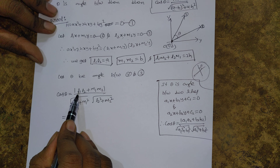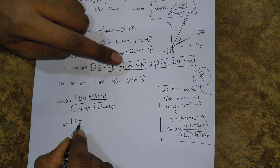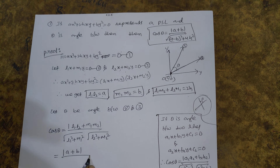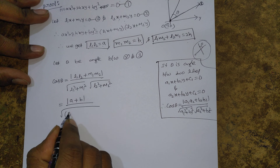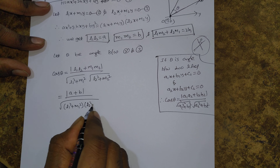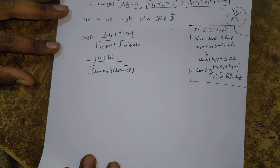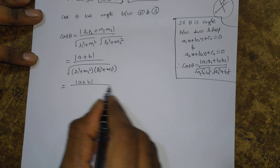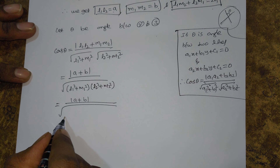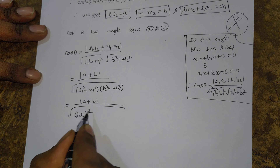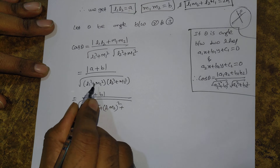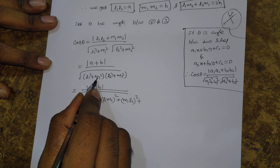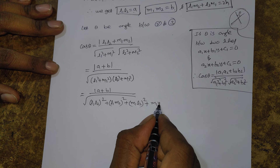In the numerator: L1·L2 = a and M1·M2 = b, so the numerator is |a + b|. For the denominator: √(L1² + M1²) · √(L2² + M2²) = √((L1² + M1²)(L2² + M2²)). Expanding: this equals √(L1²·L2² + L1²·M2² + M1²·L2² + M1²·M2²), which is √((L1·L2)² + (L1·M2)² + (M1·L2)² + (M1·M2)²).